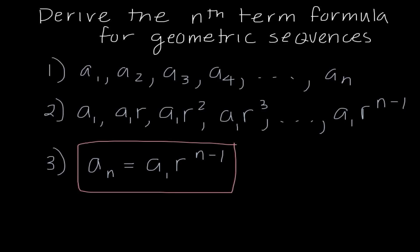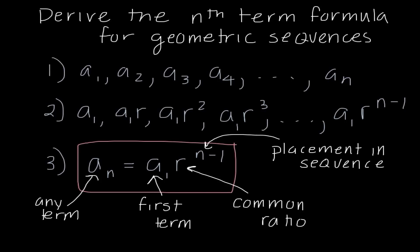Okay, so key things we need to know once again. So a sub n, just remember, is any term in our sequence. a sub 1 is always our first term. Really, the new thing in this formula is r, which is our common ratio. And we said earlier in this lecture that r is any term divided by the previous term. And then last but not least, this n value is the placement in the sequence.